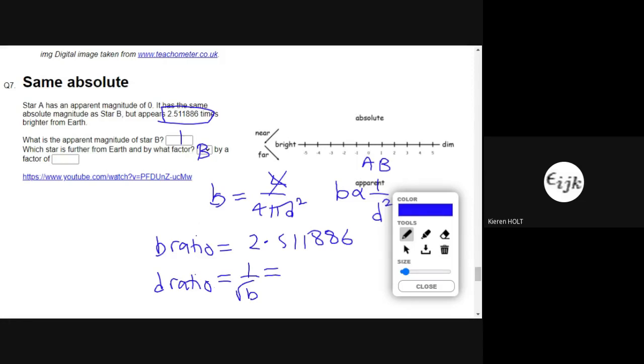I might as well do 1 over that, so that's 0.631. But for this answer here, they want an answer greater than 1, so that's 0.631 to the minus 1, and that gives me 1.58.